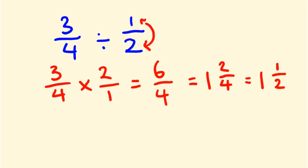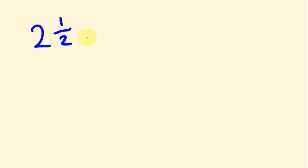Hopefully you're going pretty good. Now I'll give you a couple of mixed number ones to work with. What is 2 and a half divided by a quarter? You might be able to think: how many quarters are in 2 and a half? To work this out, we first have to change the mixed number 2 and a half into an improper fraction — where there's no whole number, just a number over another number. It's called improper because the top number will be bigger than the bottom.